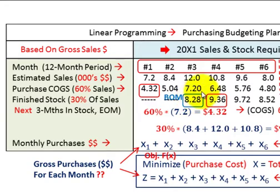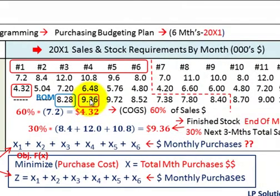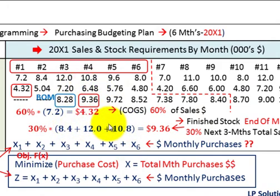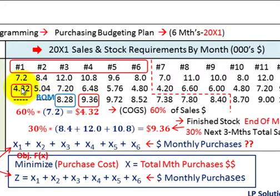For our first month — January — the end of the month stock requirement is going to be 9.36. How do we get that? We take the second month, 8.4, plus 12.0, plus 10.8 — sum those together and take 30% of that, and you come up with 9.36 in thousands of dollars. So that's our end of month stock that we have to maintain as finished stock for our first month.